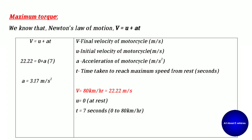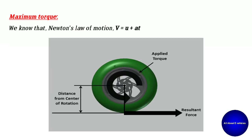Converting 80 km/h into meters per second by multiplying by 1000/3600, we get 22.22 meters per second. The initial velocity u is zero, since the vehicle is at rest. The time taken is 7 seconds to reach 0 to 80 km/h. After substituting into the formula, we get the acceleration of the motorcycle as 3.17 meters per second squared.